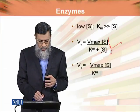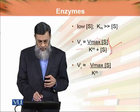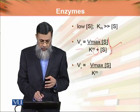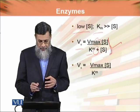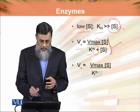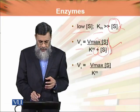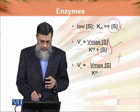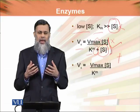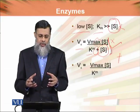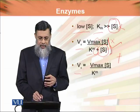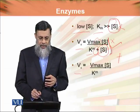The Michaelis-Menten equation is: V0 = Vmax × [S] / (Km + [S]). Now when substrate concentration is very very low compared to Km, the substrate concentration term in the denominator is very small, so we can ignore it because it becomes insignificant compared to Km. Therefore V0 simplifies to: Vmax × [S] / Km.